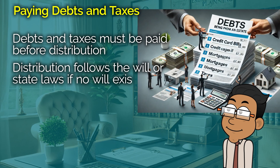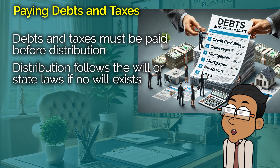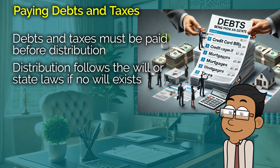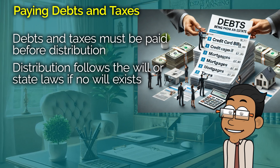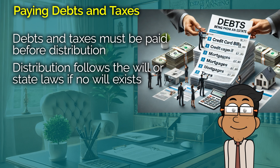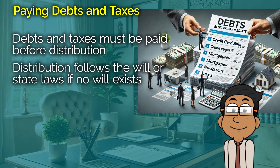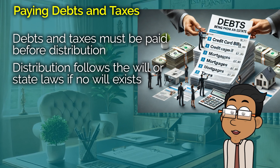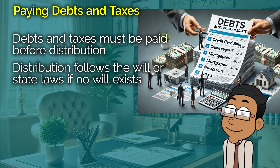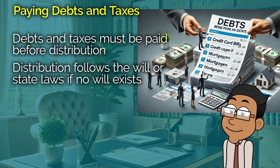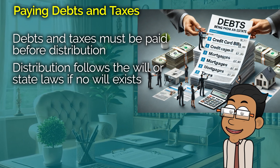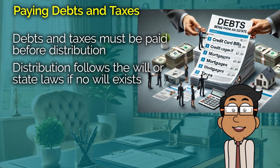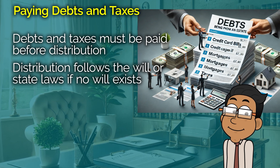Speaking of debts, the next step in the probate process is to pay off any outstanding debts and taxes. This can include things like credit card bills, mortgages, and final income taxes. The executor will use the assets from the estate to pay these debts. If the estate doesn't have enough assets to cover all debts, the court will prioritize which debts get paid first.